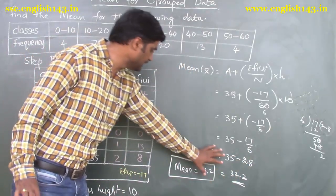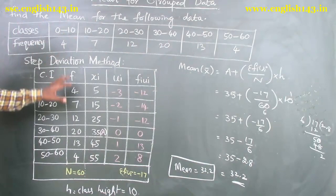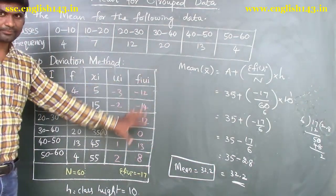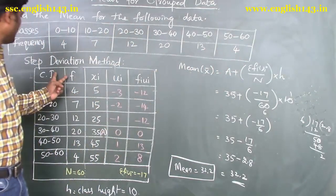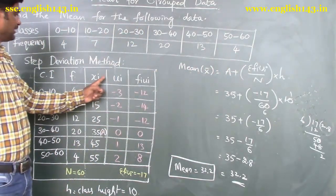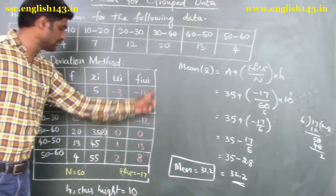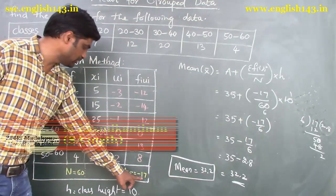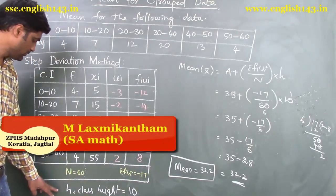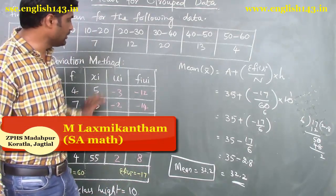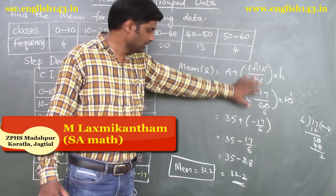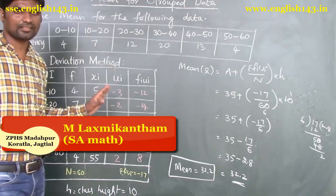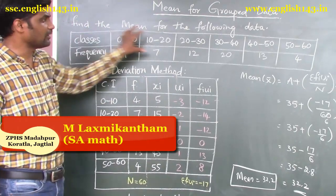So the mean for the given data is 32.2. To summarize: first create a table with xi, ui, and fi·ui columns. Calculate Σfi·ui and total frequency n. Note the class height h and assumed mean a. Substitute all values in the formula X̄ = a + (Σfi·ui / n) · h. By simple calculation, we get the mean. This is the process to find the mean for grouped data using the step deviation method.